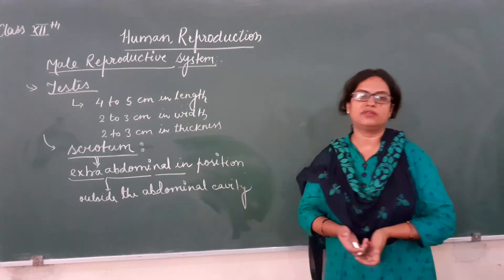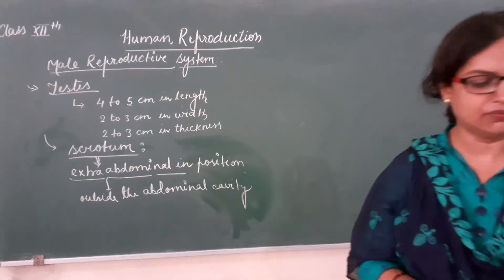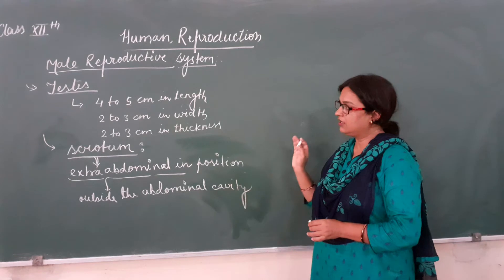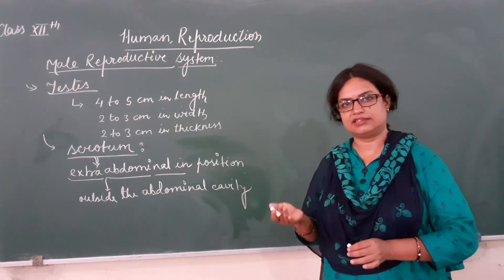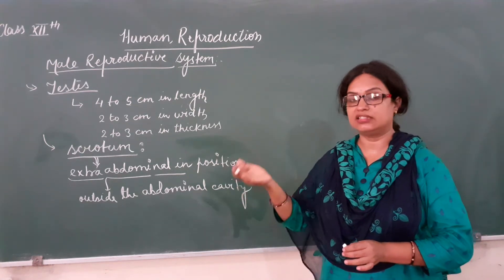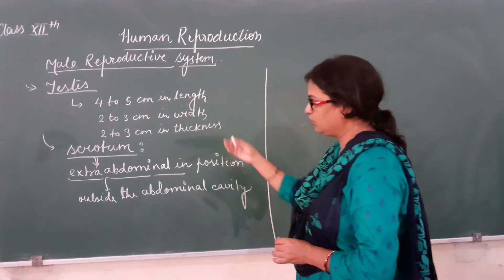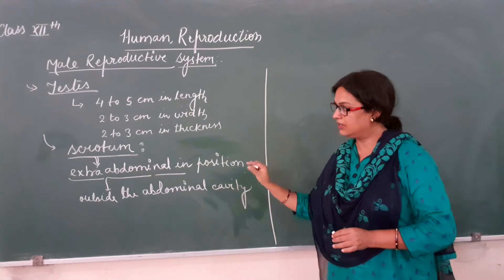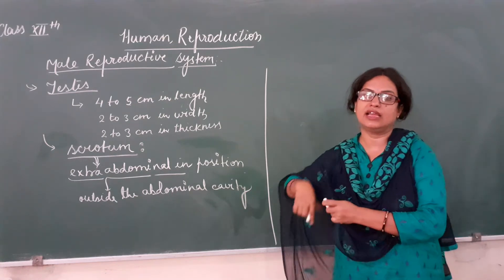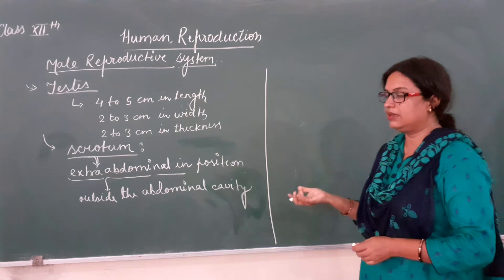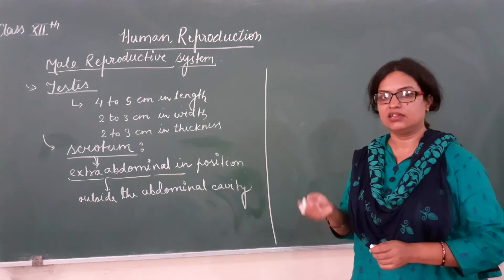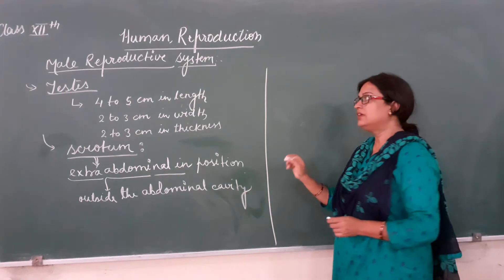So the position of the testis is extra-abdominal — it lies outside the abdominal cavity. In contrast, the primary sex organ of the female is abdominal in position.